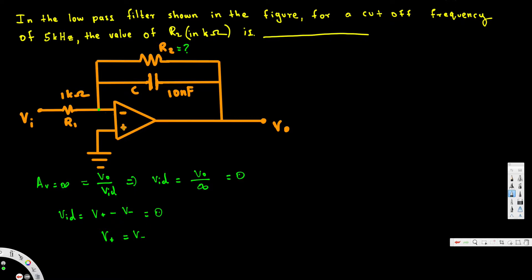Here, voltage across the positive terminal is going to be zero because it is connected to ground. Since we found that voltage across the positive terminal equals voltage across the negative terminal, the negative terminal is also zero volts. Now our purpose is to find R2, and in order to do that we can go ahead and apply KCL at the inverting terminal.